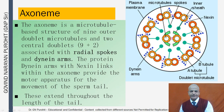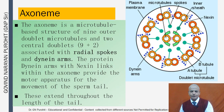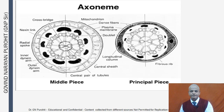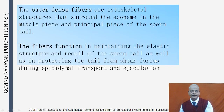The microtubules are associated with radial spokes and dynein arms. The protein dynein arms with nexin links within the axoneme provide the motor apparatus for movement of the sperm tail, extending throughout its length. You can see pictures of the axoneme in the middle piece and in the principal piece.